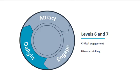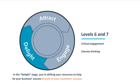Levels six and seven — critical engagement and literate thinking — are most closely tied to the delight stage in the inbound methodology. In the delight stage, you're shifting your resources to help tie your business's success directly to your customer's success.